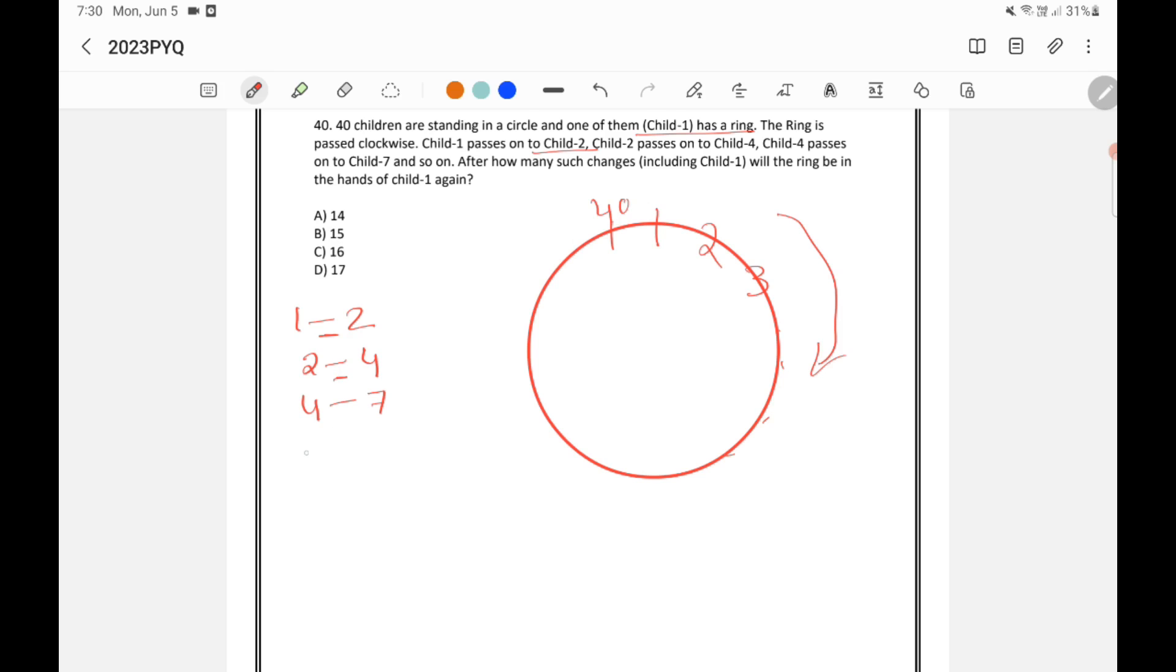From child 7, it will go to 11. We need to add 4. From 11, it will be 16. We need to add 5. From 16 to 22, we need to add 6. Then 22 to 29. Then 29 plus 8 is 37.